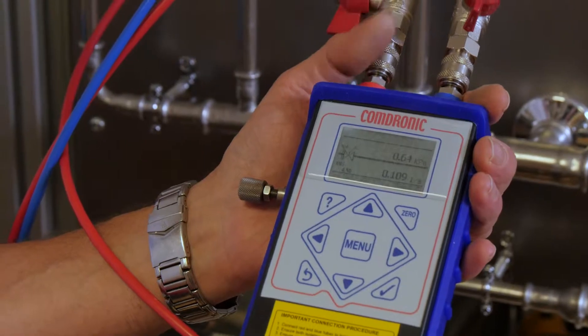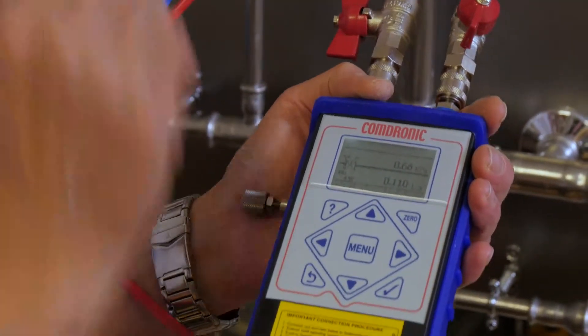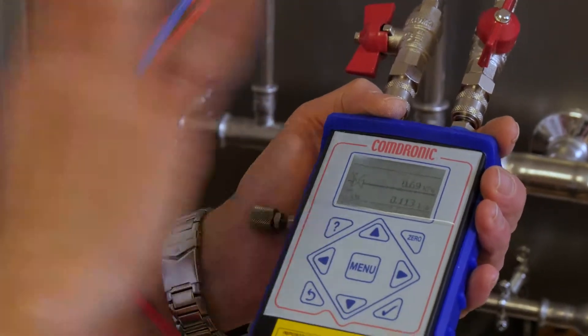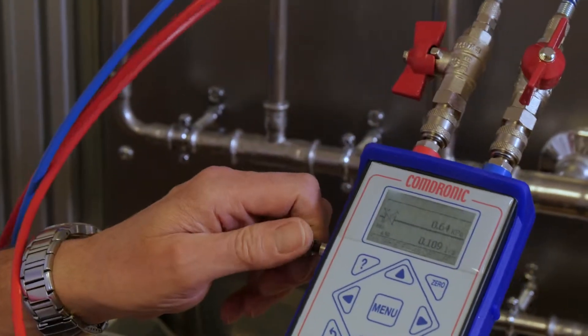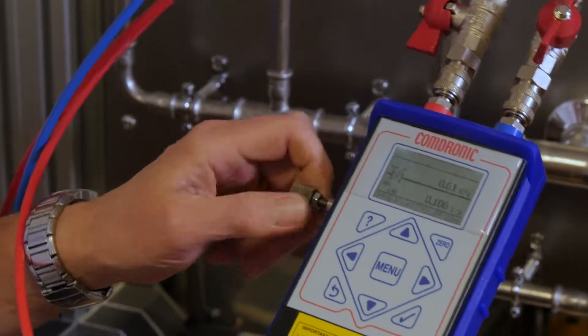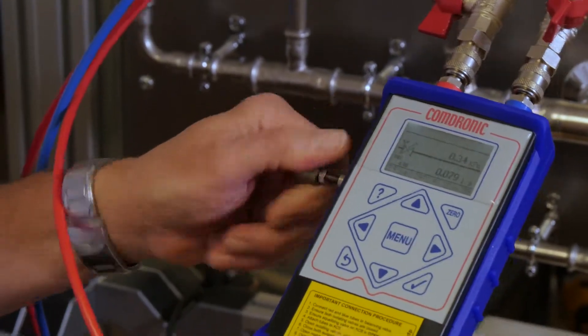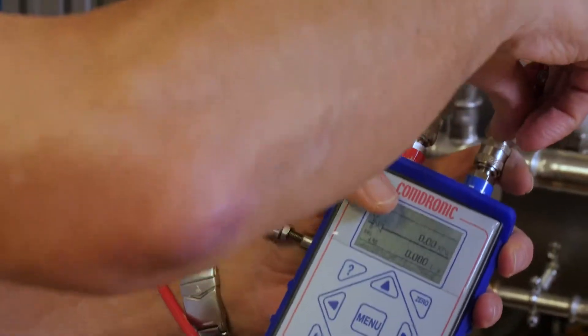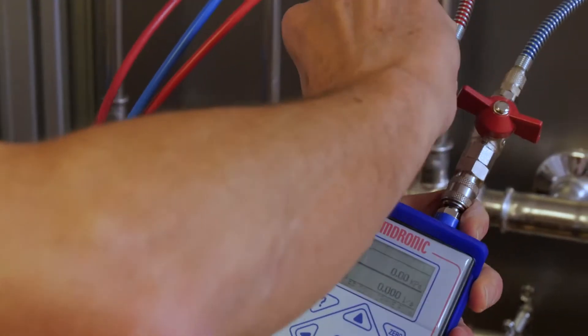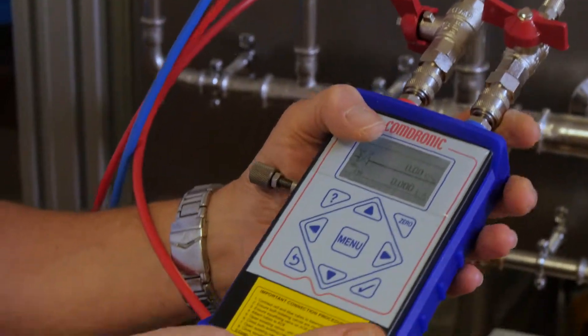Once we're at the flow rate that's required we can then lock the valve into position. And we've finished with this particular valve. So we can now open the equalizing valve. Close the valves on the hoses. And we can disconnect from the system.